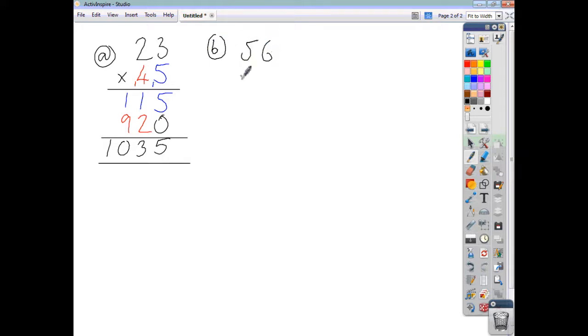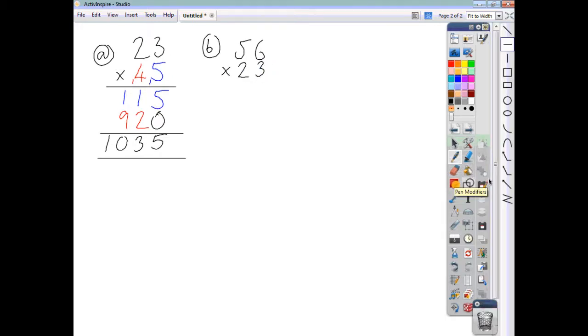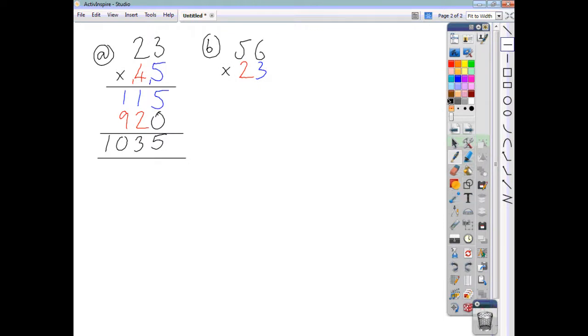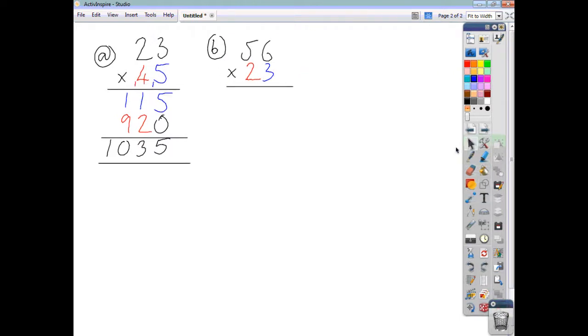Let's do 56 and we'll multiply by 23. Again, using colours, I'll write 23 using red and blue. The first thing we'll do is multiply the 56 by the 3. 3 sixes, 18. Then 3 fives, 15 add the 1, 16.